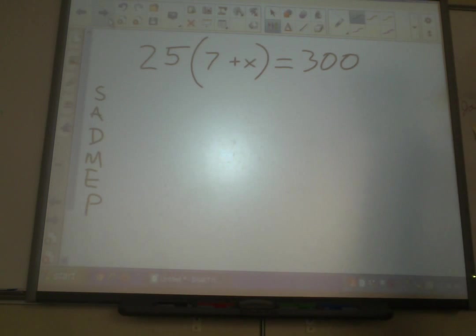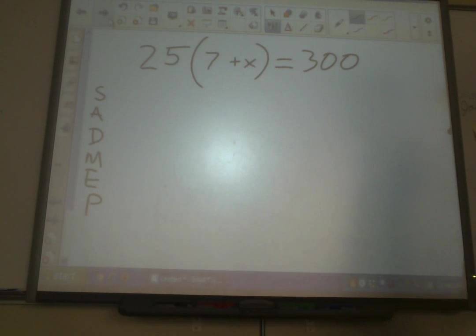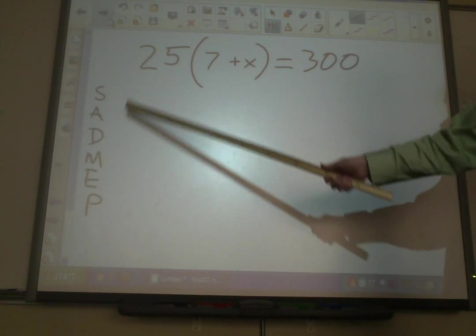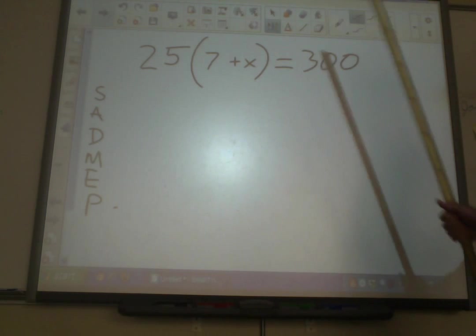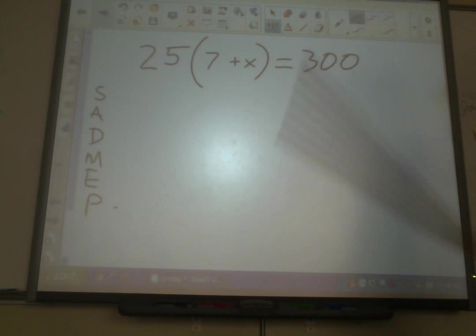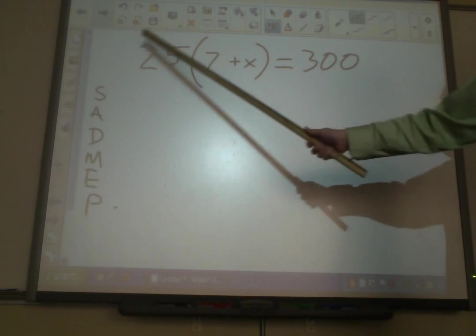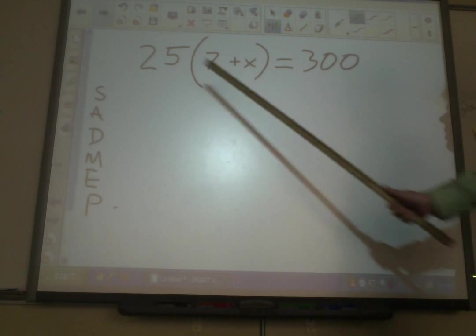Now you might want to say that the first thing we need to get rid of is this 7 because it's being added to x. But hold on. That's our change for today. This is inside the parentheses. And according to SADMEP, parentheses come last. So the very last thing we're going to do is anything that's in the parentheses. The first things we're going to do are the things outside parentheses. There's only one thing outside parentheses, and it's this 25. And you've got to ask yourself, what's the 25 doing to everything in parentheses? It's multiplying.